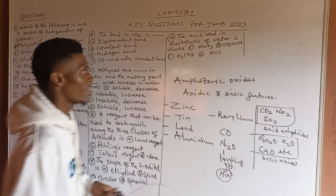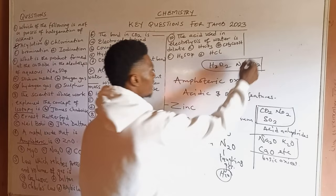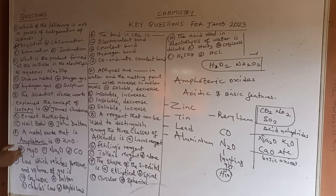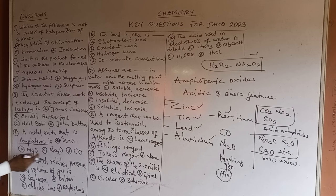We also have peroxides, such as hydrogen peroxide and sodium peroxide. The oxidation state of oxygen in peroxides is -1 (normally -2 in most compounds). Checking the options: a metal oxide that is amphoteric — the unique metals are zinc, tin, lead, aluminum, and beryllium. The answer is A, zinc oxide. The others are basic or neutral oxides.